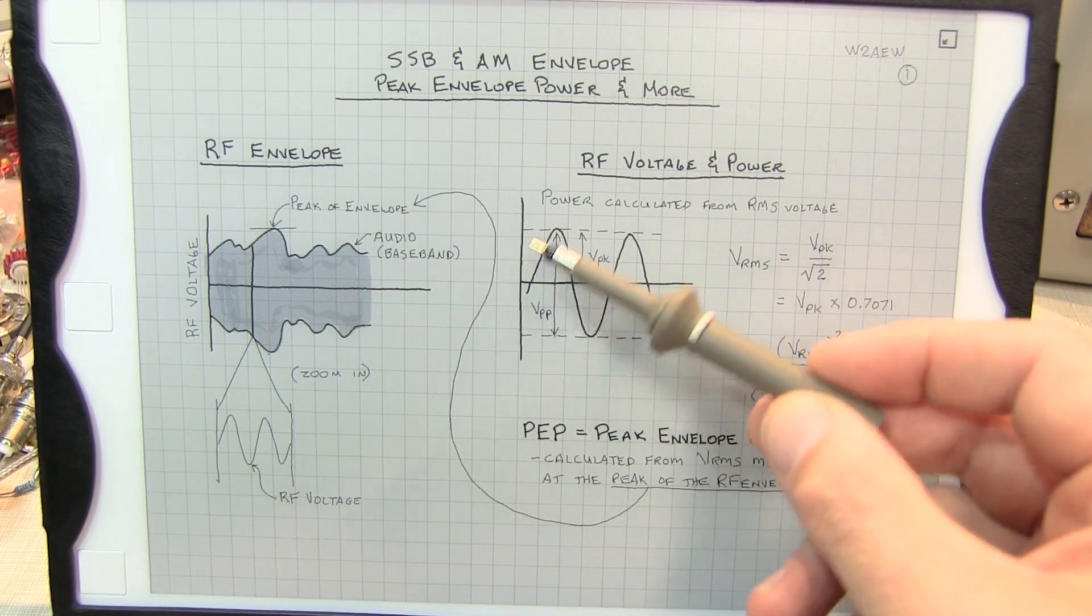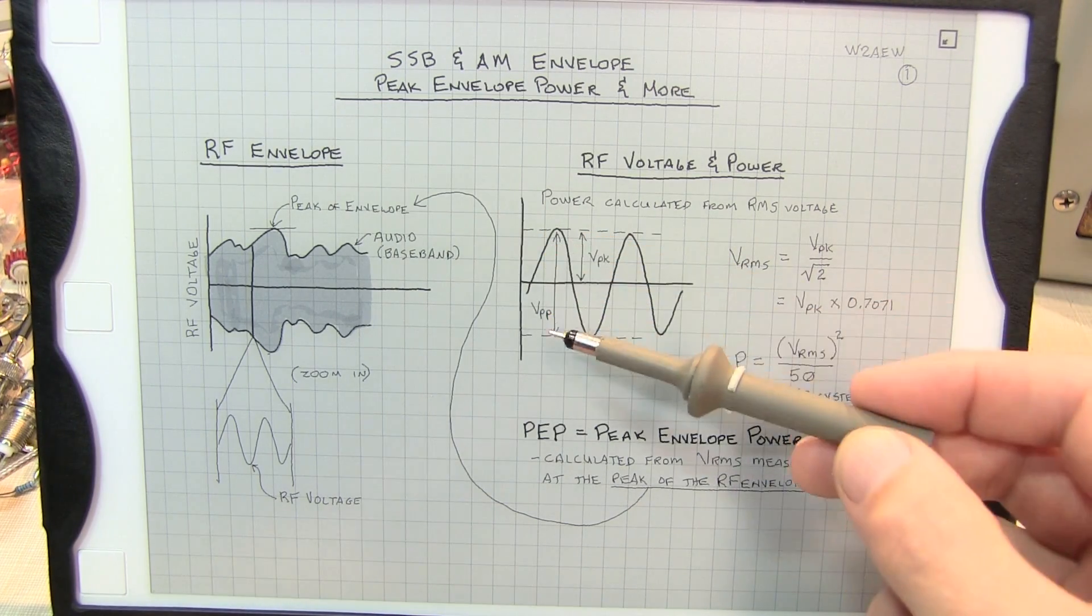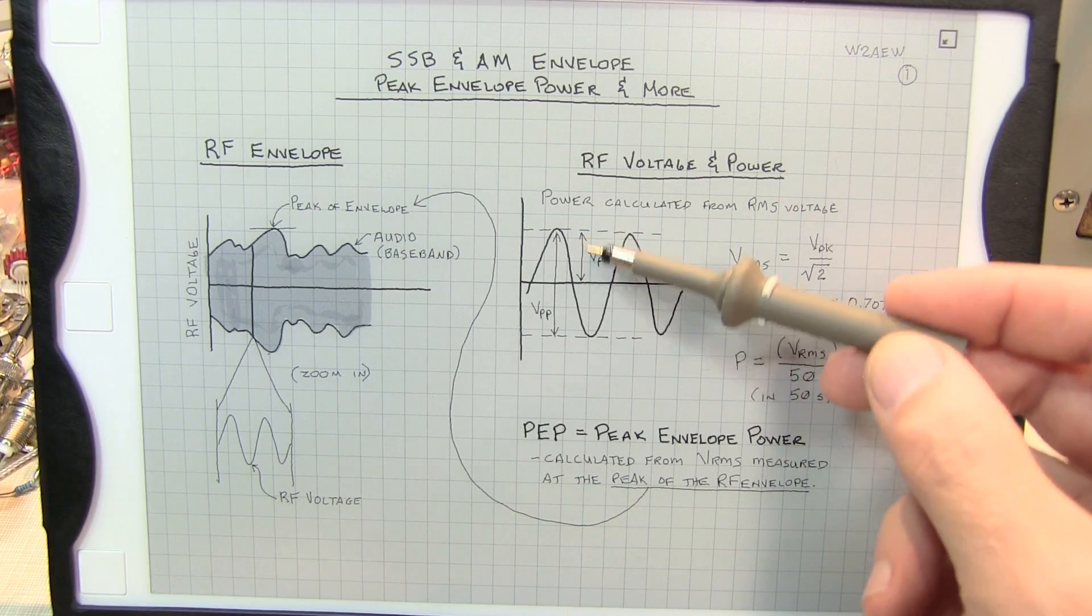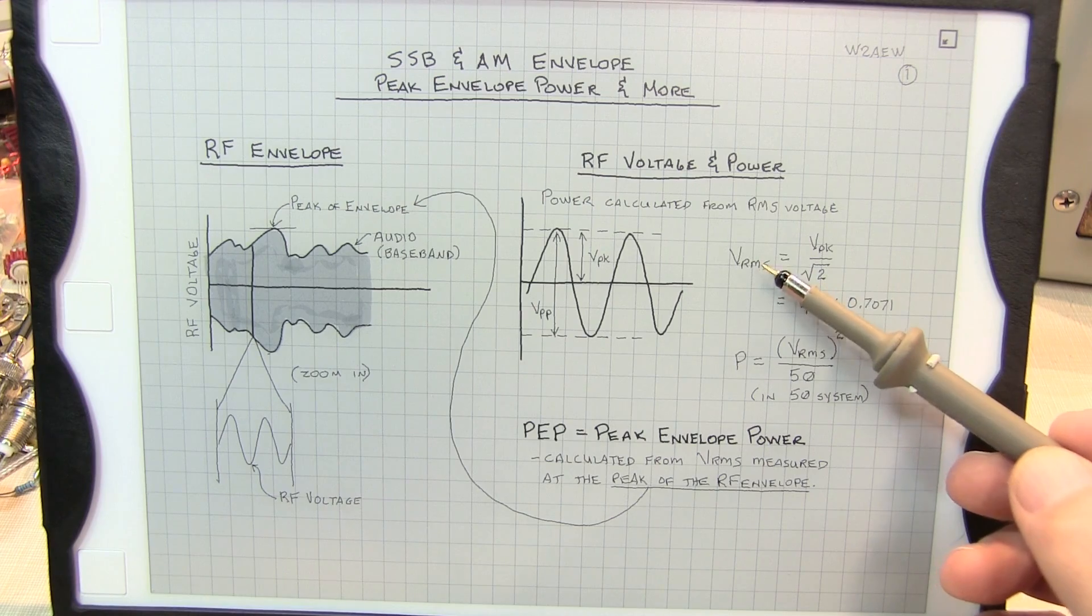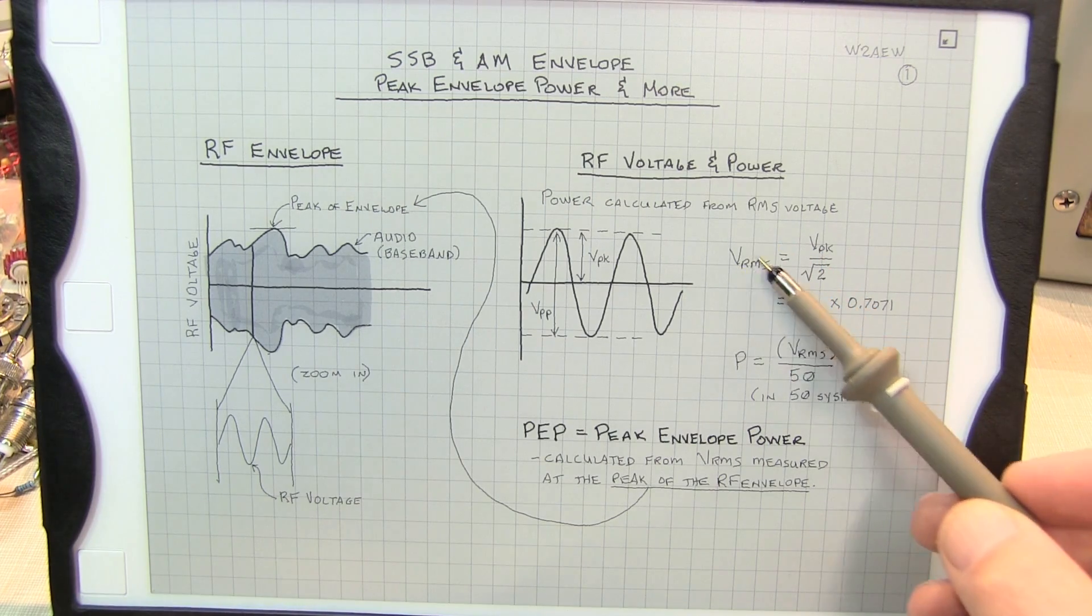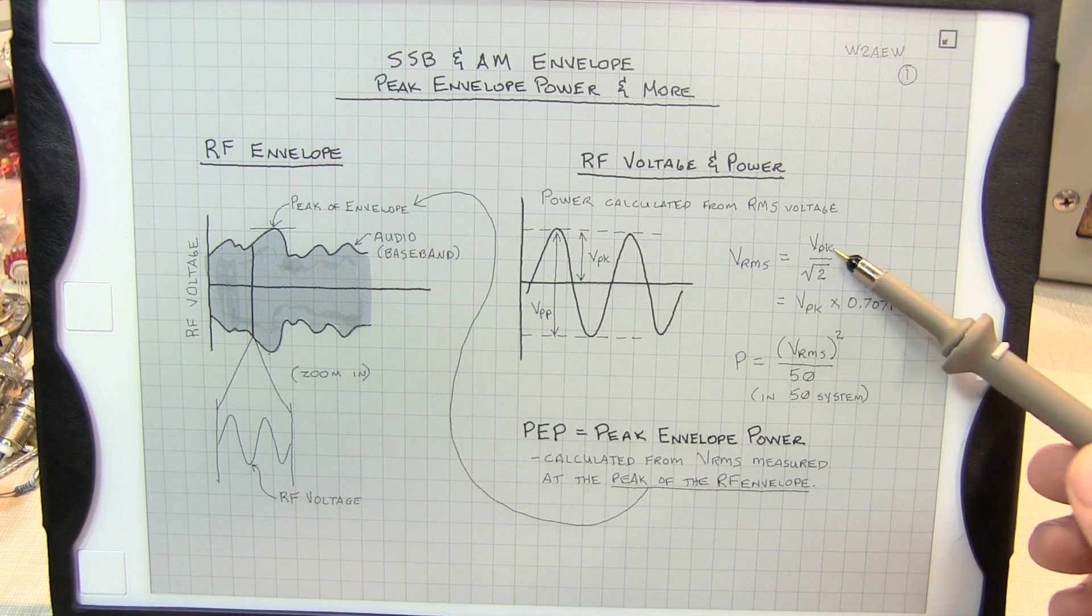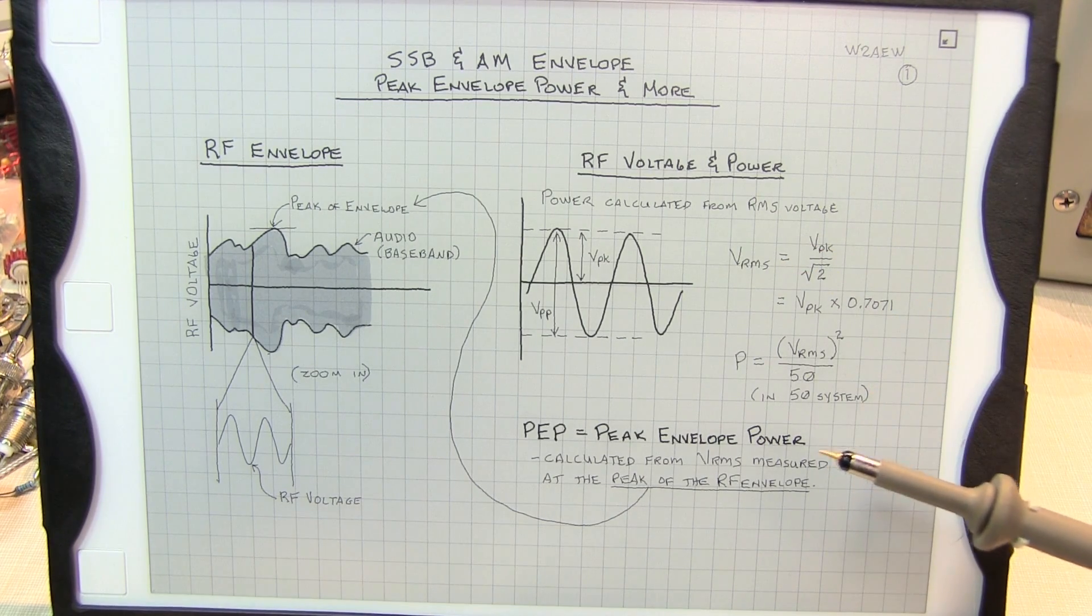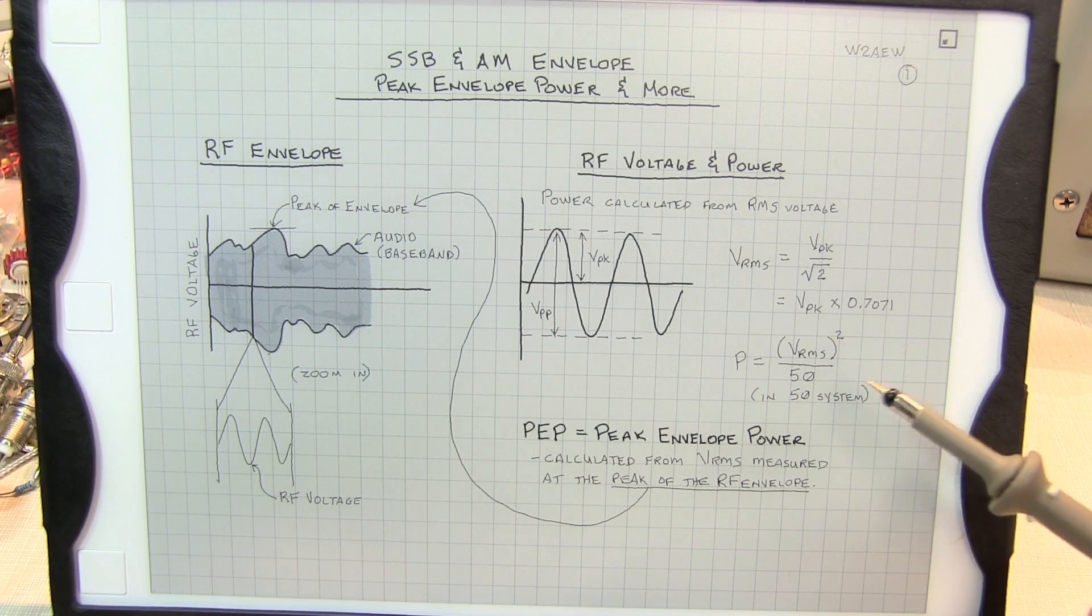So here's our zoomed in view of that RF signal. We can look at things such as peak to peak voltage or half of that being the peak voltage, but when talking about power, we've got to talk about RMS voltage. The RMS voltages can be computed quite simply over even just a single cycle by looking at the peak voltage divided by square root of two, which is the same thing as saying peak voltage times 0.7071.